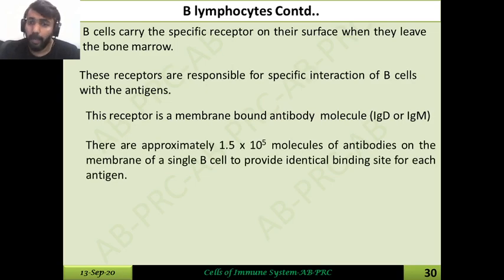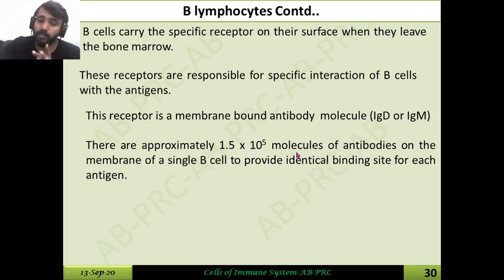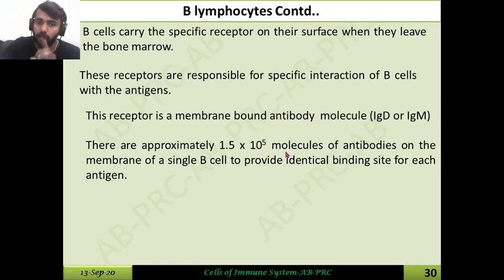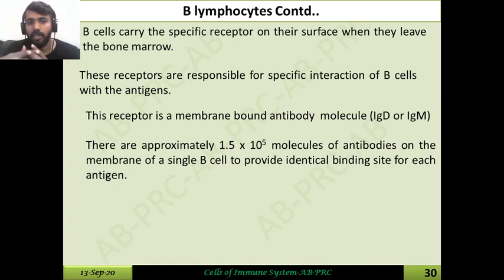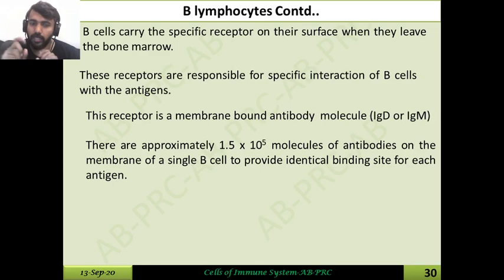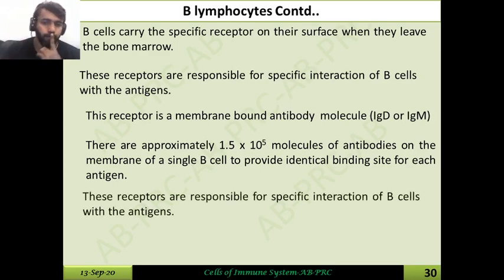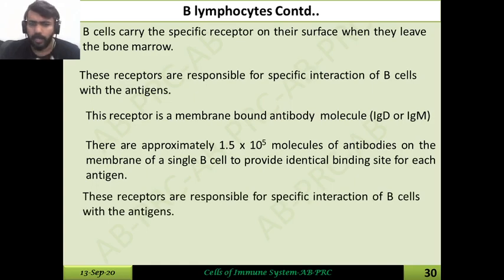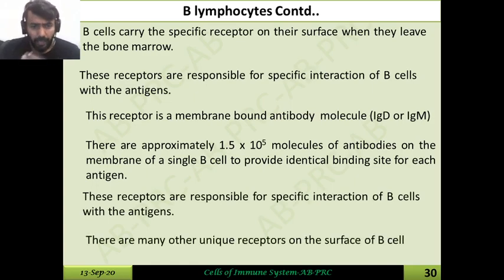Regarding the number of these receptors, it is a very large number: approximately 1.5 × 10^5 molecules of antibodies are present on the membrane of a single B cell. This large number of receptors helps the B cell identify and interact with antigens, providing identical binding sites for antigen interaction.